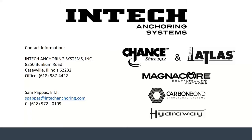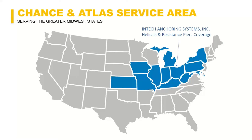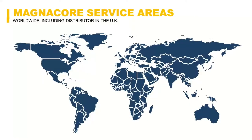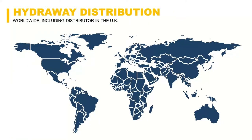Please feel free to reach out with any questions or comments, or if you need design assistance. Here's a graphic representation of our footprint with Chance Helical Piers and Atlas Resistance Piers. For MagnaCore hollow bar micropile, we're not restricted to a territory — we can sell it anywhere, even outside the United States. We currently sell and market Hydraway worldwide, so please reach out if you have any need.